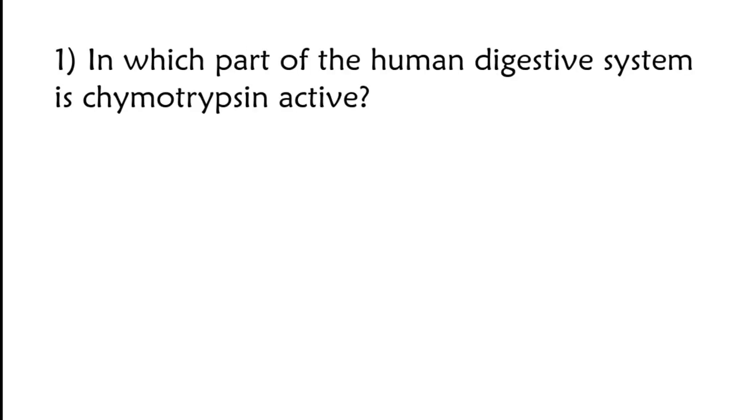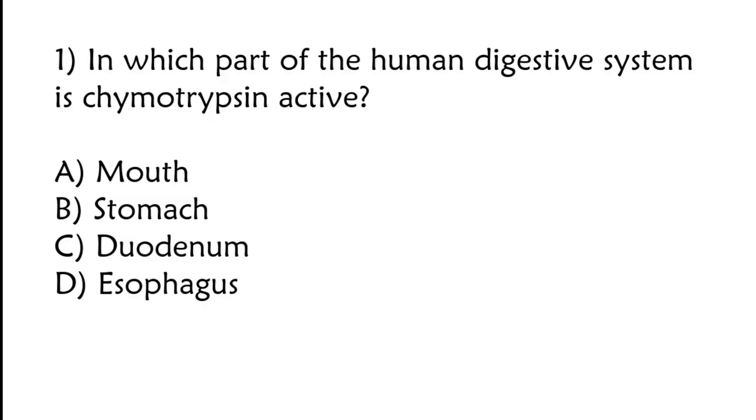In which part of the human digestive system is chymotrypsin active? Mouth, stomach, duodenum, esophagus? Correct answer is option C, duodenum.